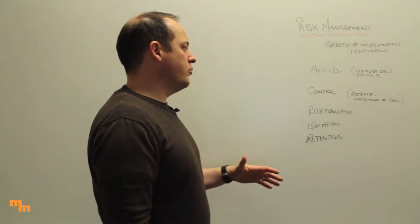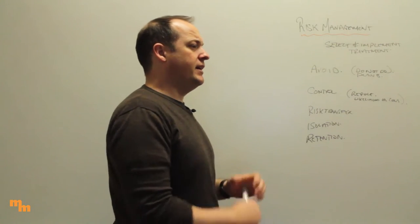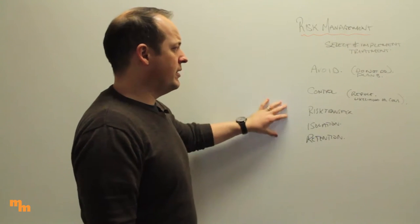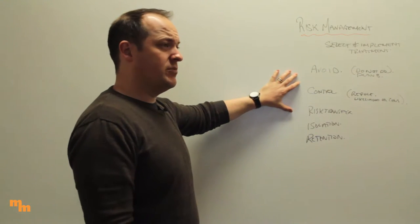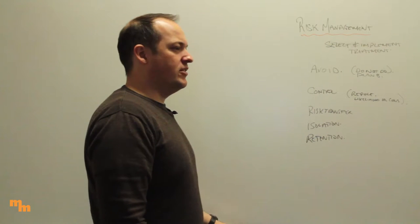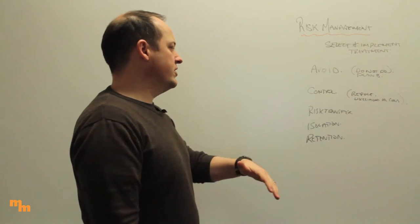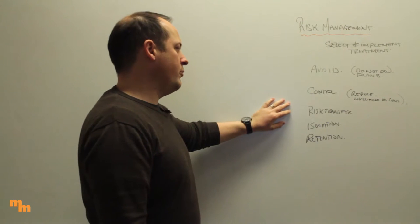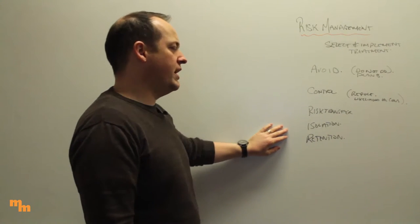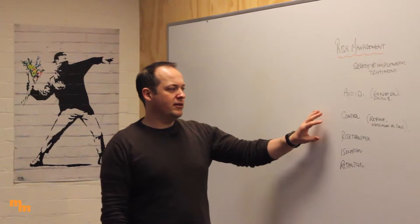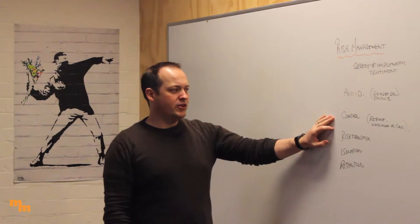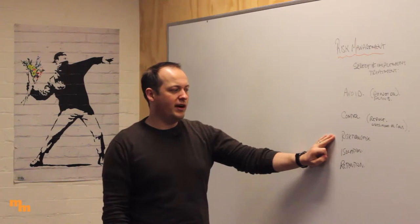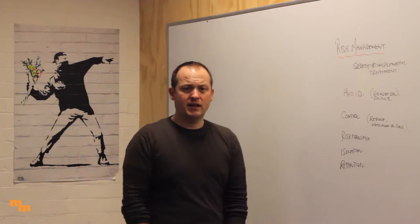Finally, there's retention — whatever's left over after all that, we just accept. We accept the burden of loss or benefit that comes to us; we're just going to live with it. It might be what's left after all other strategies, or we might have to accept the whole thing. Residual risk is what we retain when we can say: we can't avoid it, we've controlled it as much as we can, transferred as much as we can, isolated as much as we can — whatever's left is ours.